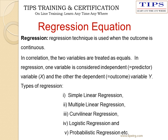What is the regression equation? Regression equation analysis is the outcome of the continuous relationship between two variables. In correlation, two variables are treated as equal, whereas in regression equation analysis, one variable is considered as independent (the predictor variable X) and the other as dependent (the outcome variable Y). Types include simple linear regression, multiple linear regression, curvilinear regression, logistic regression, and probabilistic regression.